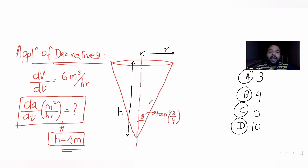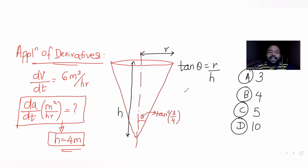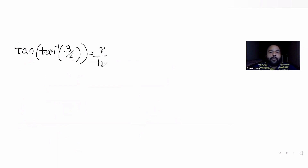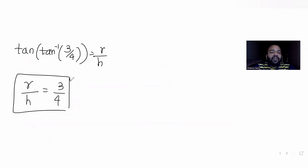Since radius is r and height is h, I can apply the idea of tan theta in this right triangle. So tan theta equals opposite over adjacent, that is r over h. Theta is given as tan inverse of 3/4, which equals r over h. So from this, r over h equals 3/4.